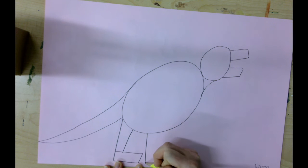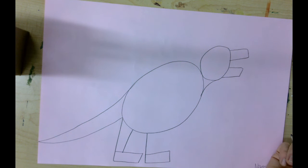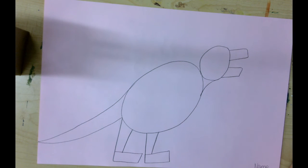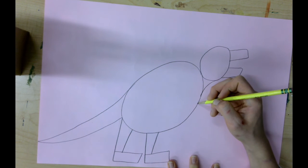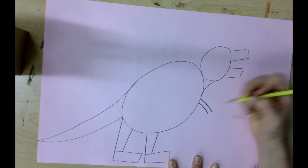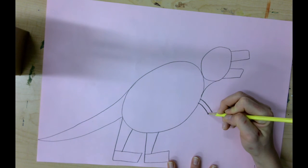And then two small arms. So go up here, draw a line that curves down, curves down, and then the letter W for the claws. Leave some space. Curve down, curve down, W for the claws.